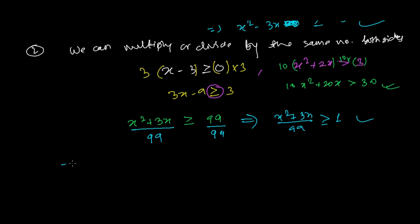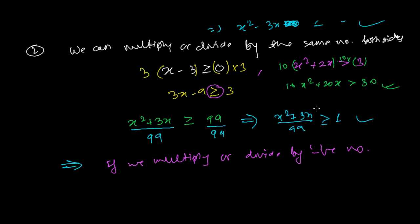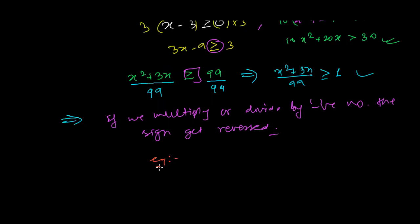Here is one thing you need to take care of very importantly: if we multiply or divide by a negative number, the symbol — the sign — gets reversed. For example, if I have x² + 2x > 9 and I multiply both sides by -3, the sign will reverse in the next step.